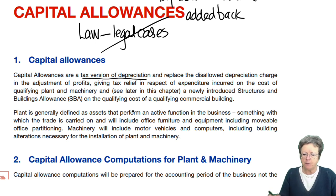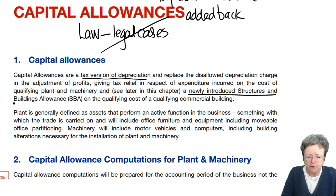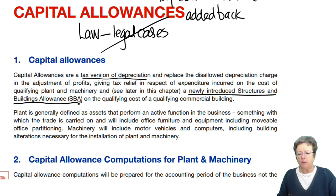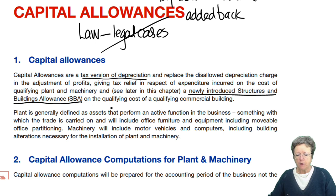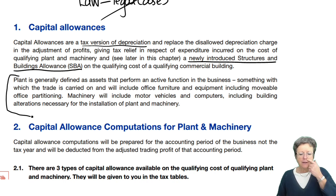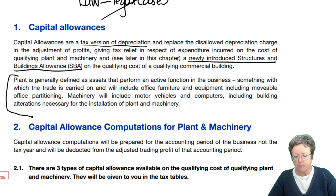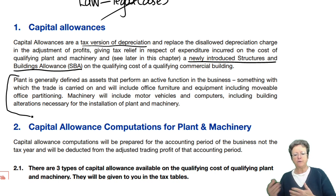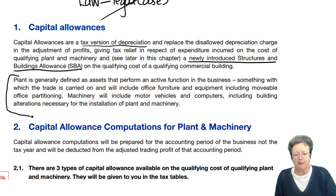There is then something new called the structures and buildings allowance, which we will look at in this chapter. Plant has been defined by legal cases as assets that perform an active function in the business — something that the trade is carried on with — and includes office furniture, equipment, things like that.